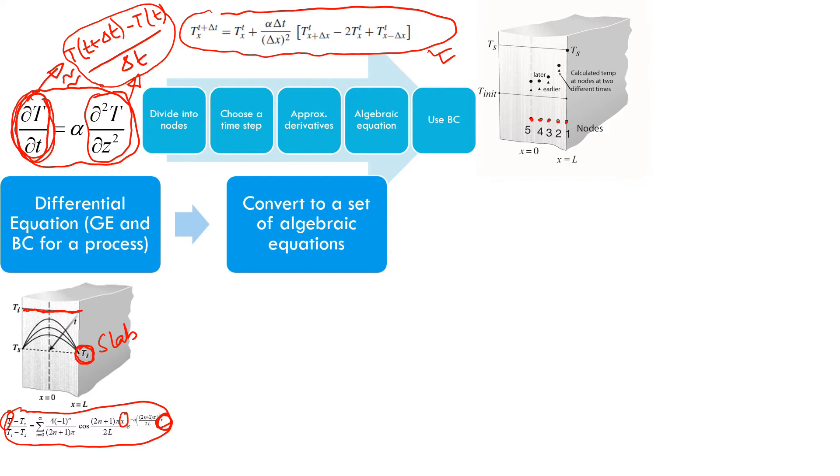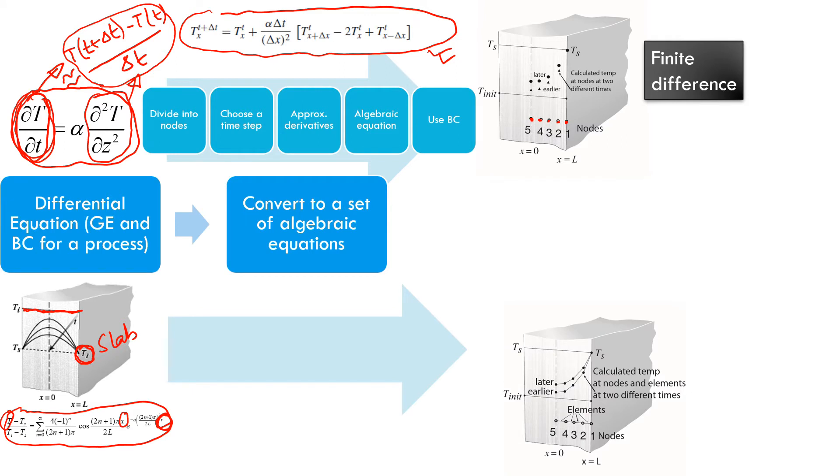So likewise, for the other method, that was the finite difference method. For the other method, what I'm going to do is again divide the entire region into elements. So elements are two, let's say we have a two-noded element. So we have two nodes and the space in between together, it makes an element. And I divide this entire region into elements. And there, what I do is I also choose time stepping in exactly the same way as the previous method.